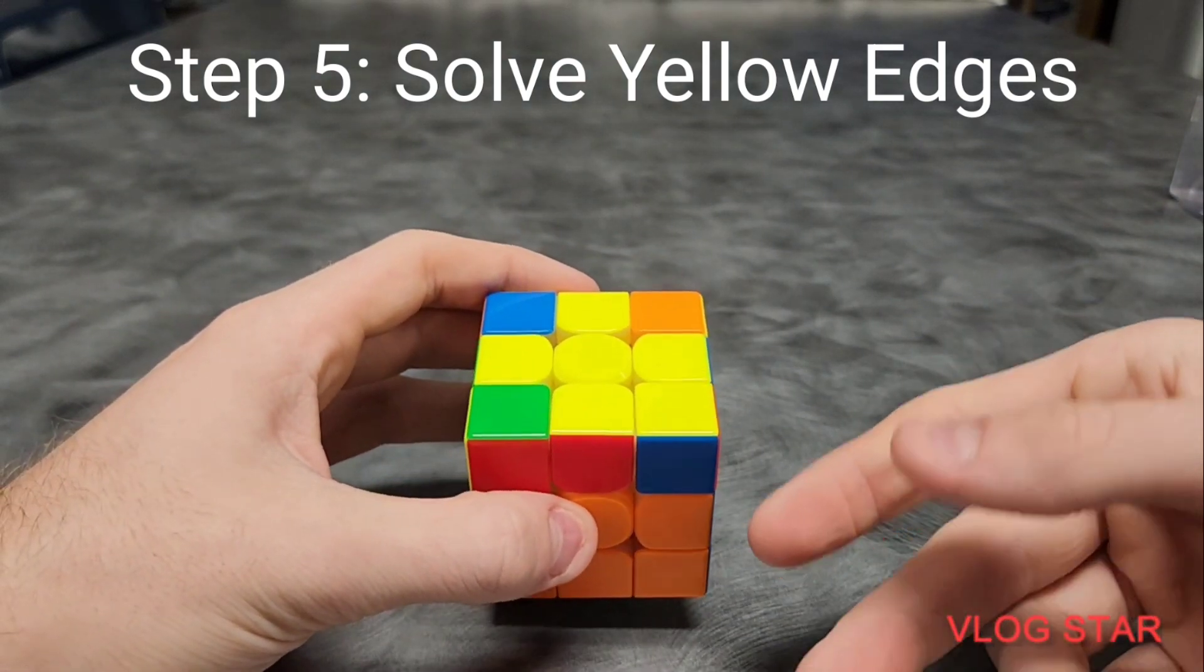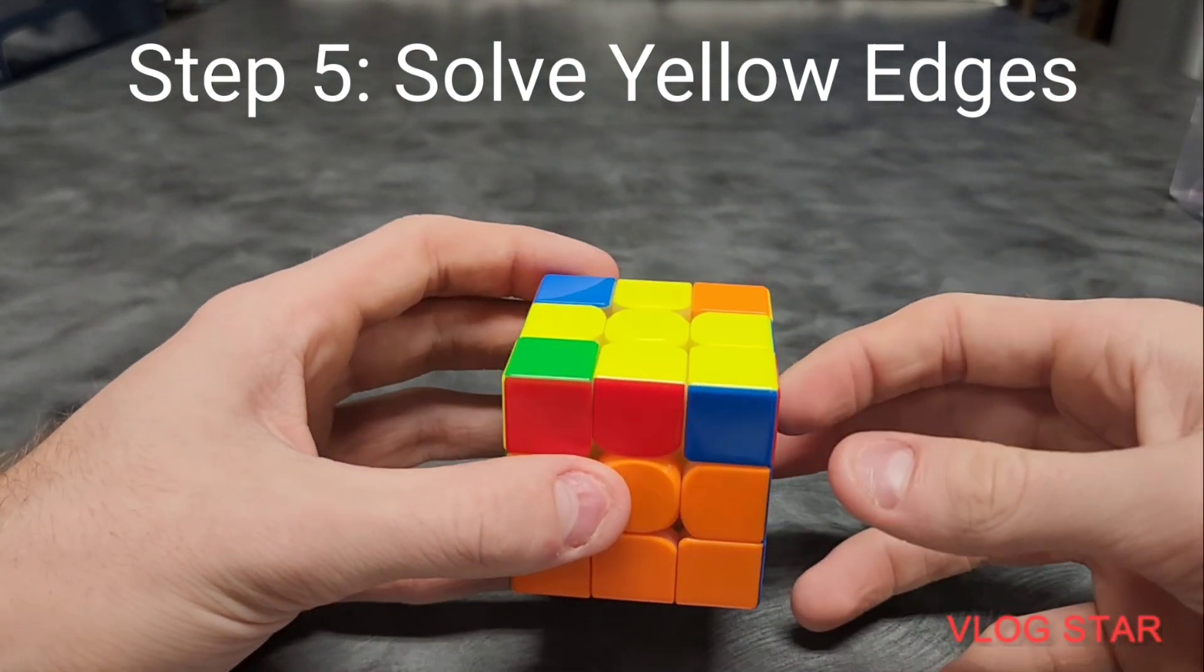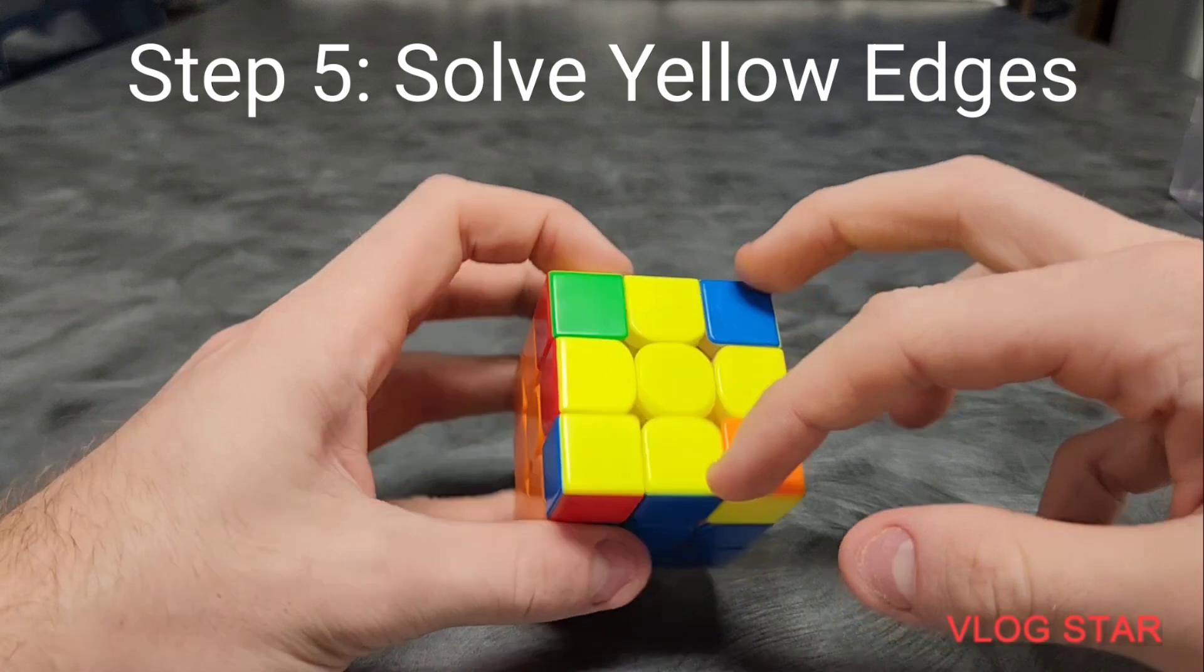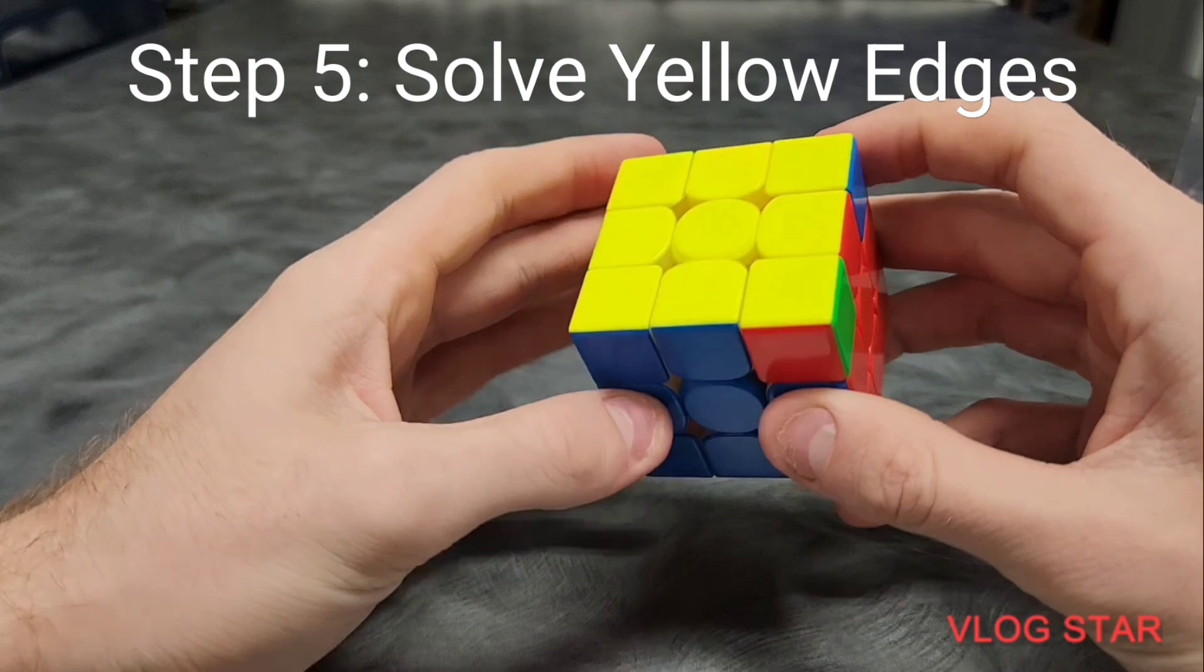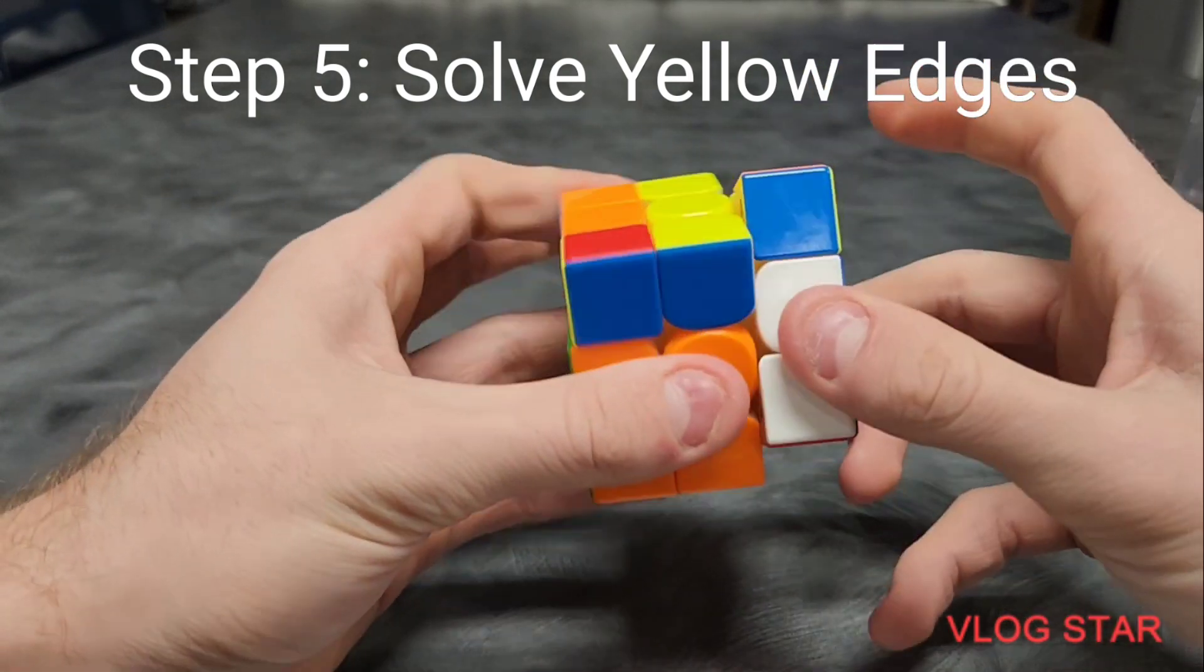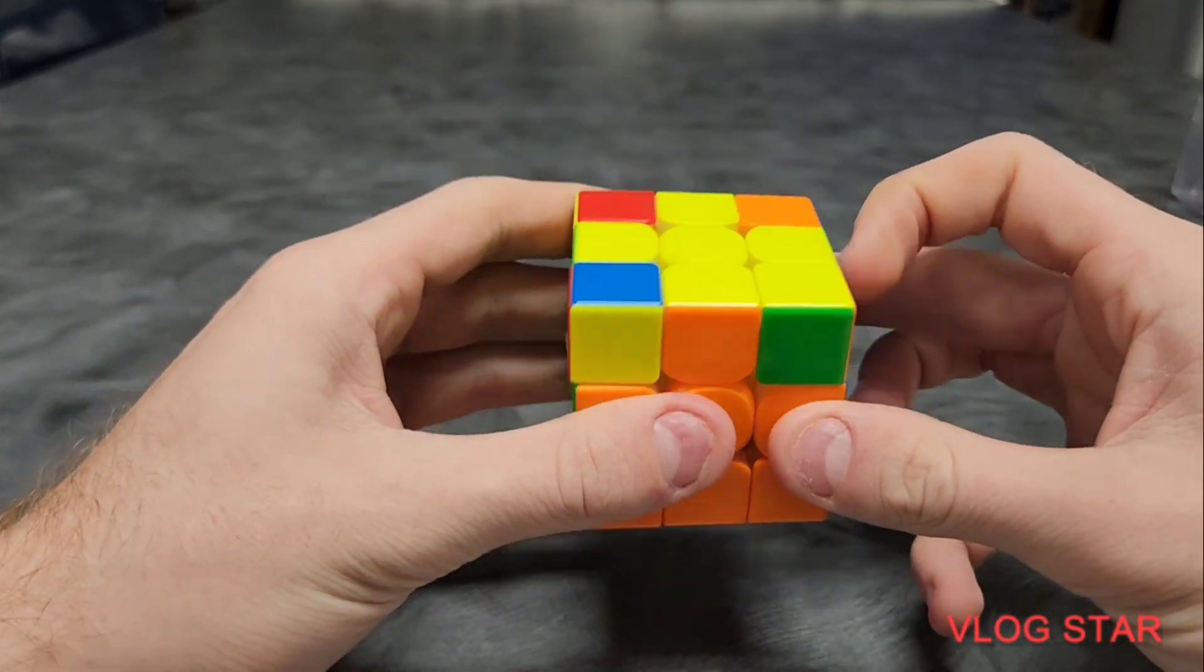Now, if they're across from each other, which is a possibility, you're going to just do the algorithm once. And then, set the solved edges to the back and right. And then do it again.